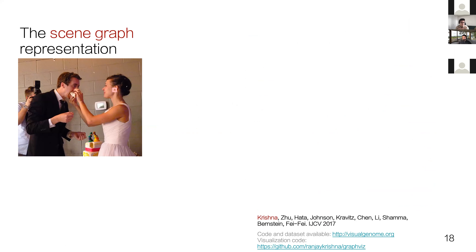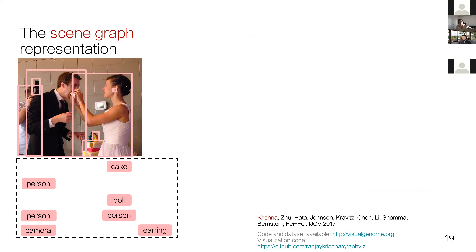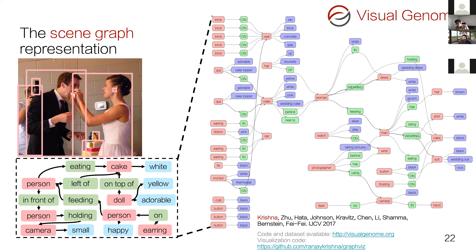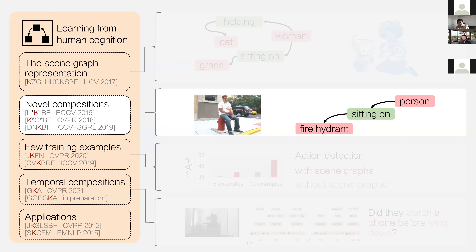The scene graph representation encodes every single image with a set of objects grounded as bounding boxes, attributes associated with every single object, and relationships encoding the interactions between those objects. To really study the effects of scene graphs and their utility, we embarked on the Visual Genome project, which aimed to map out the whole visual world with scene graphs. We annotated a large dataset of scene graphs to study when and how scene graphs are useful.